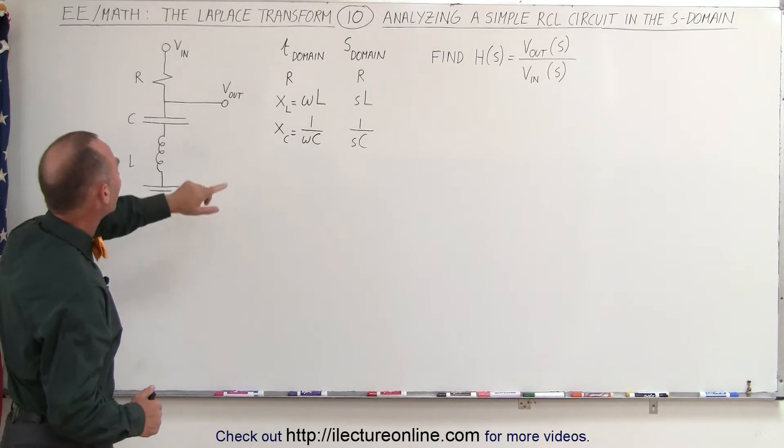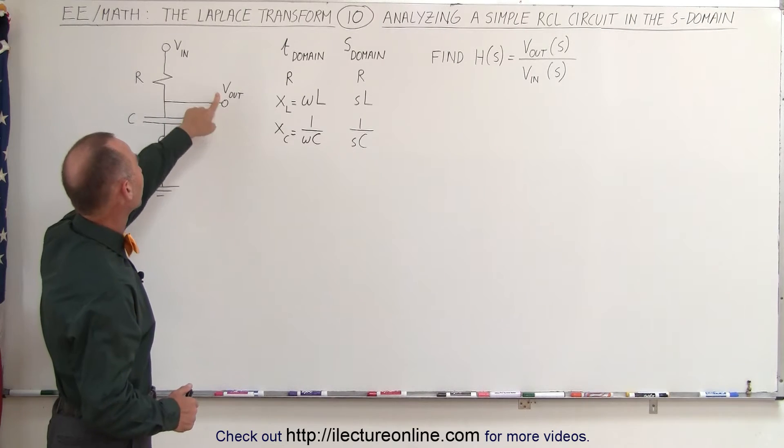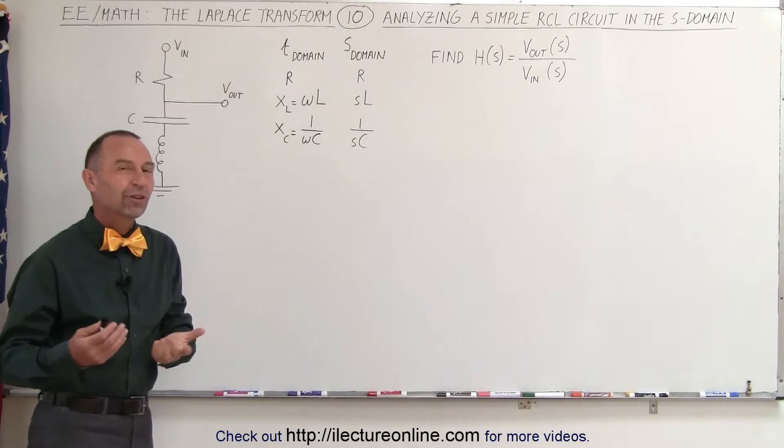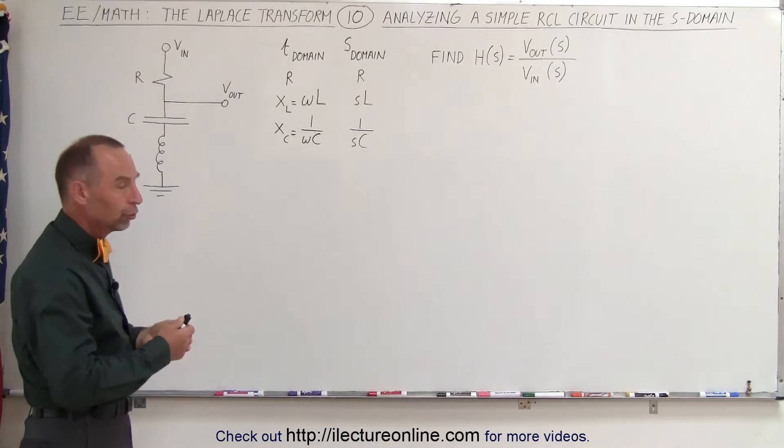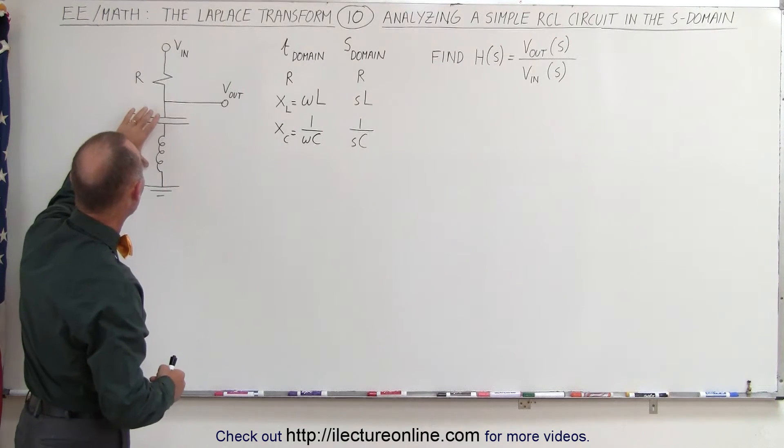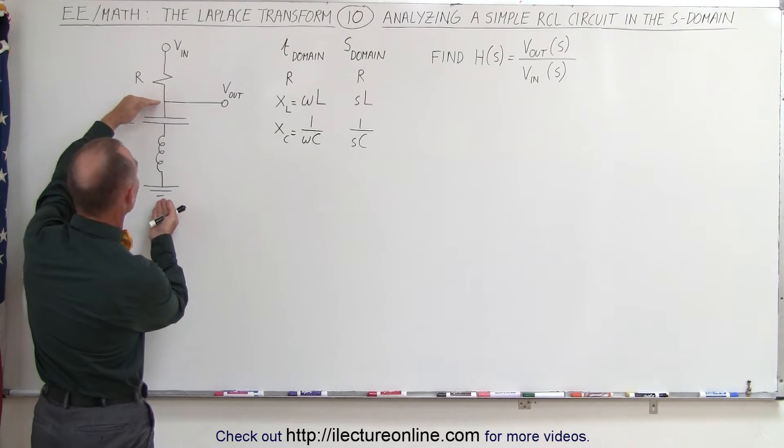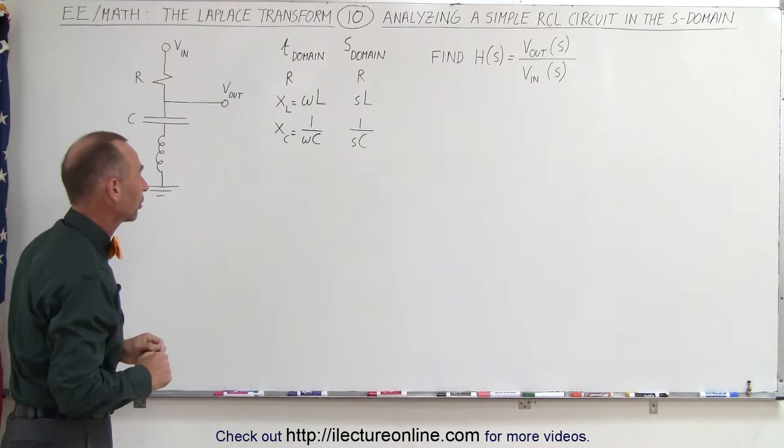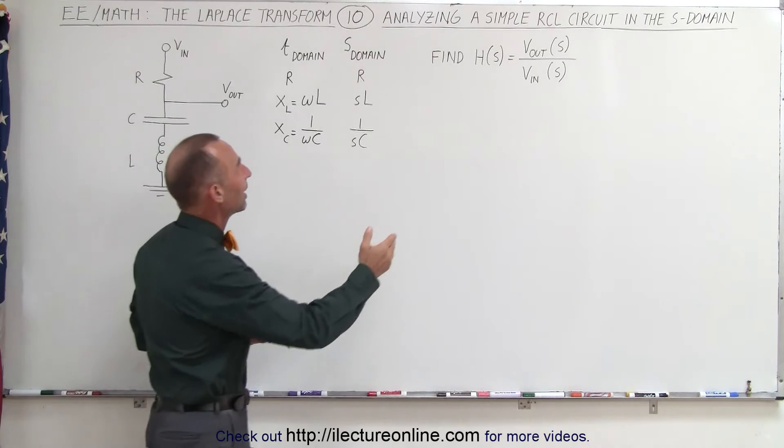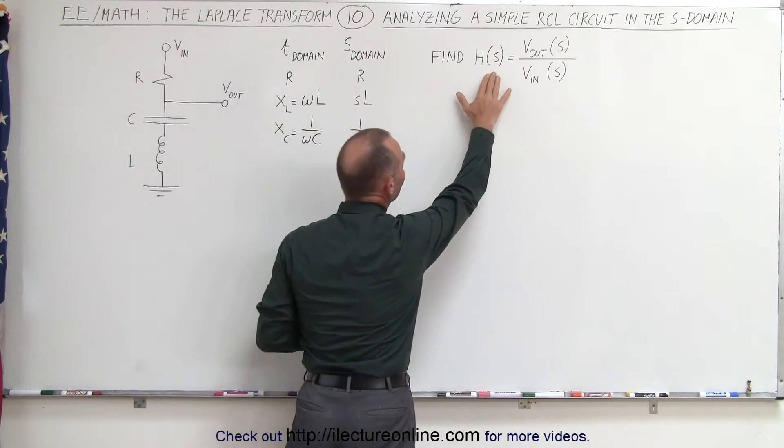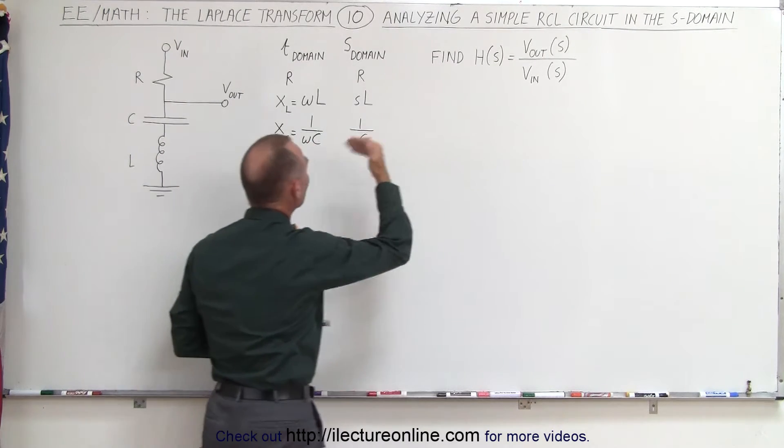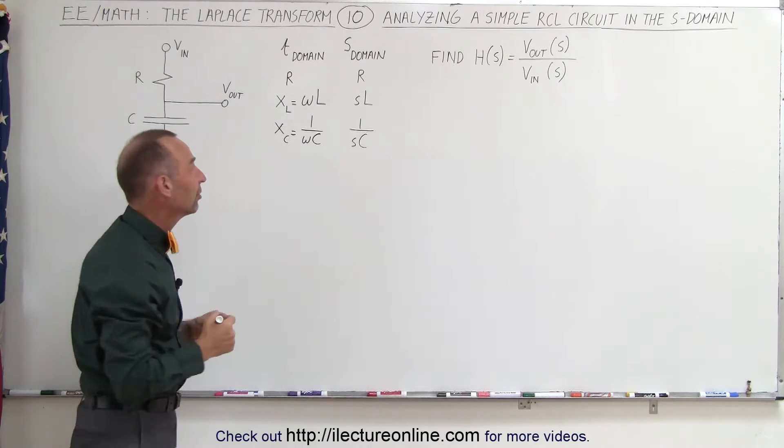We're going to find the ratio of the output voltage versus the input voltage, and of course that's going to be proportional to the ratio of the resistance at the bottom part of the circuit divided by the reactance of the bottom part of the circuit and the reactance of the total circuit. In other words, if we're going to find H in the S domain, then we're first going to find H in the frequency domain.